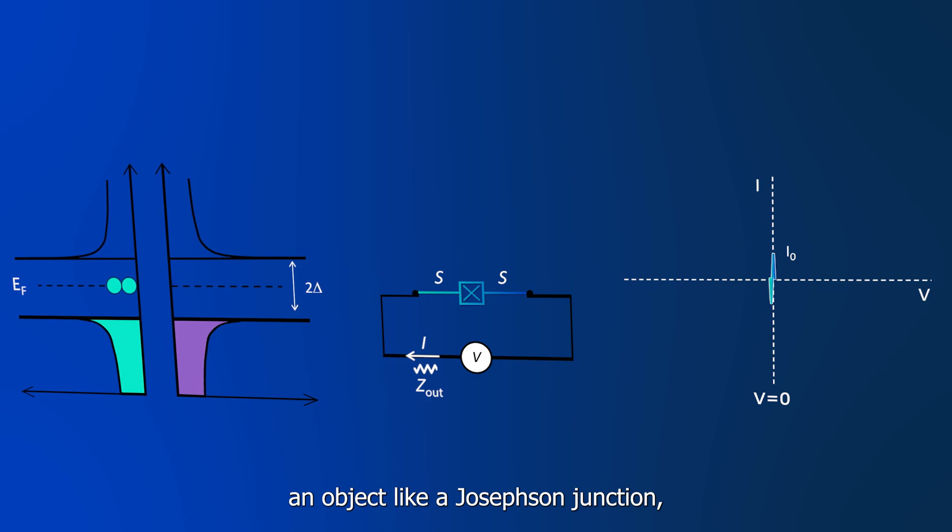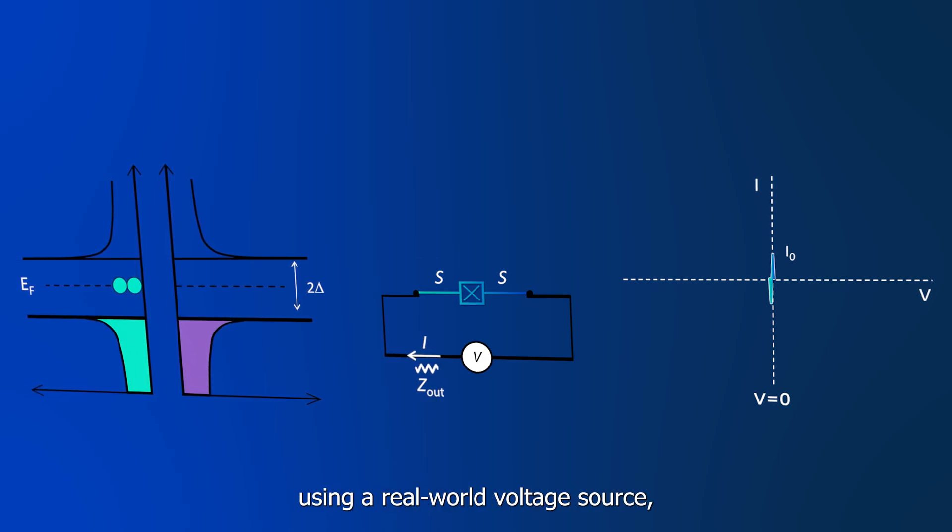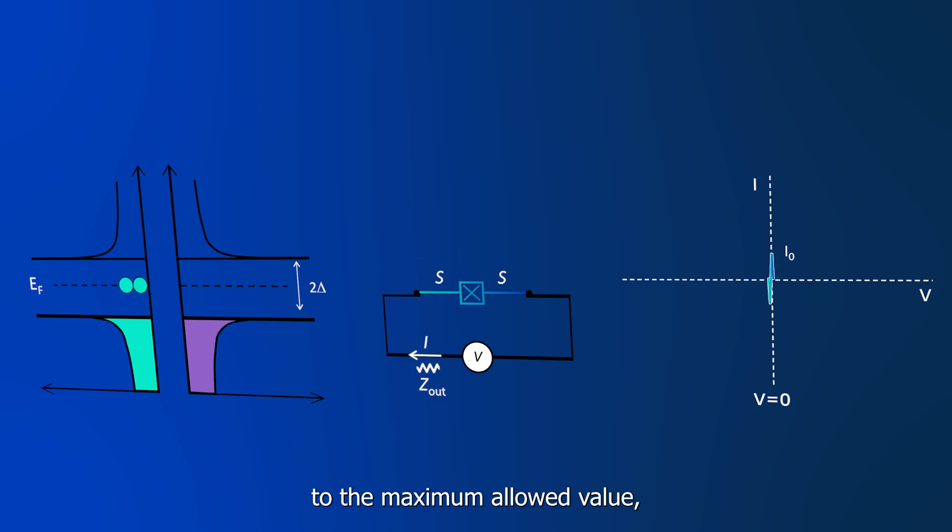When you try to voltage bias an object, like a Josephson junction, that has truly zero resistance, using a real-world voltage source, you will inevitably apply a small current. Current will grow up to the maximum allowed value, that is I sub zero.